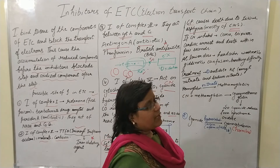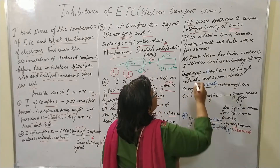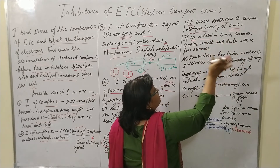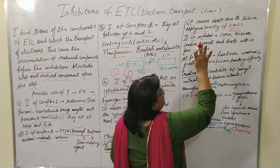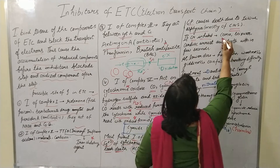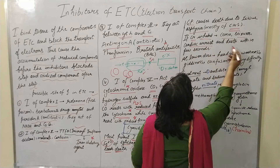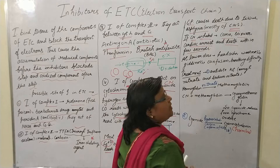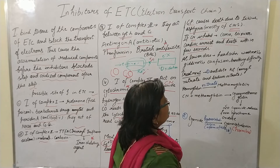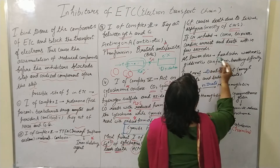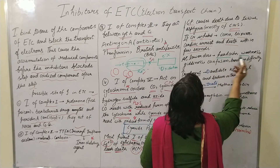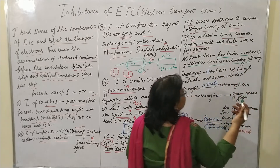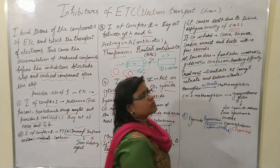If cyanide is inhaled, it shows symptoms and causes death within a few seconds — including coma, seizures, and cardiac arrest. But if taken in a lower dose, it causes headache, weakness, giddiness, confusion, and breathing difficulty.